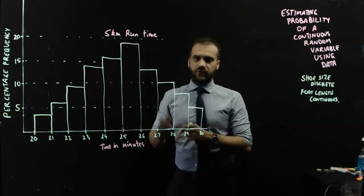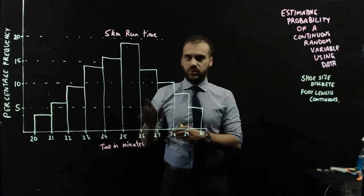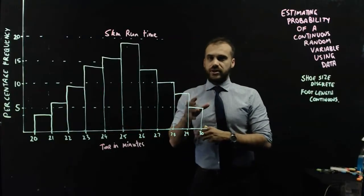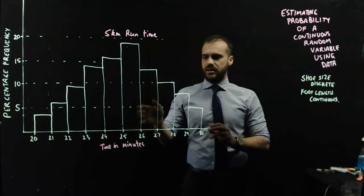And similarly, over here, some students run 25.00001, and they're in here. And some students run 25 minutes, 59.99999 seconds, and they're in this bin here.